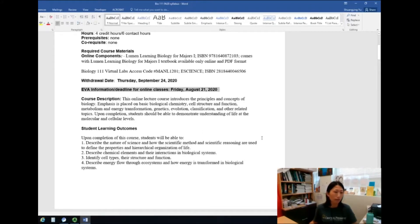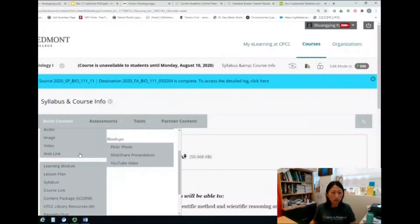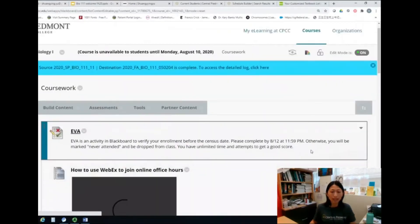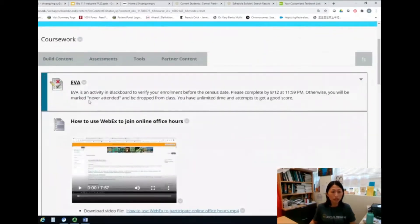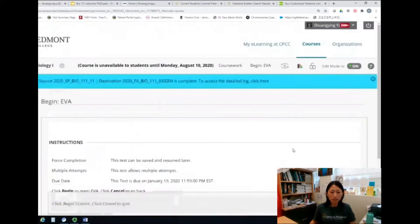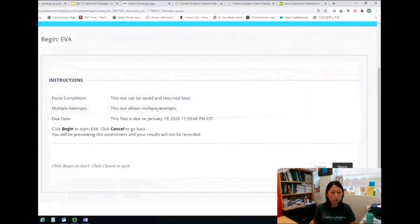EVA, this is for verification of online enrollment. So you have to do this. It's going to be very easy to do. I just made some quiz questions about the syllabus and you have unlimited attempts. So you can get a good grade because this is part of your assignment grade.